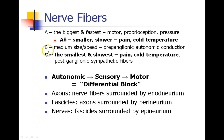The B fibers are medium-sized and transmit at medium speeds, typically carrying some autonomic signals. The C fibers are the smallest and the slowest transmitting fibers — these are your pain fibers, which as anesthesia providers we are interested in being able to control.